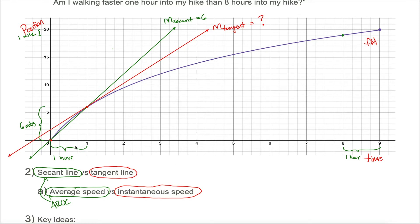The reason we were hiking faster in the first hour than the last hour is because for a given amount of x, our y is changing by a lot more — six miles versus one mile. Clearly we're traveling much faster over the first hour. Since position is measured on the vertical axis, another way of saying we traveled further is that our y coordinate changed more for a given x coordinate. A way to think about how much y is changing is how steep the curve is at any given point.